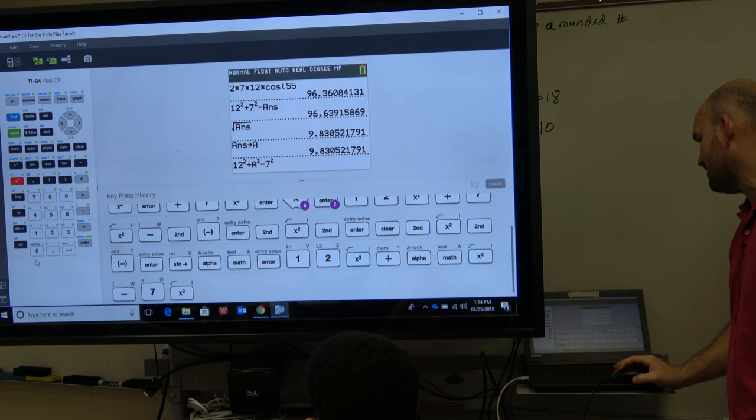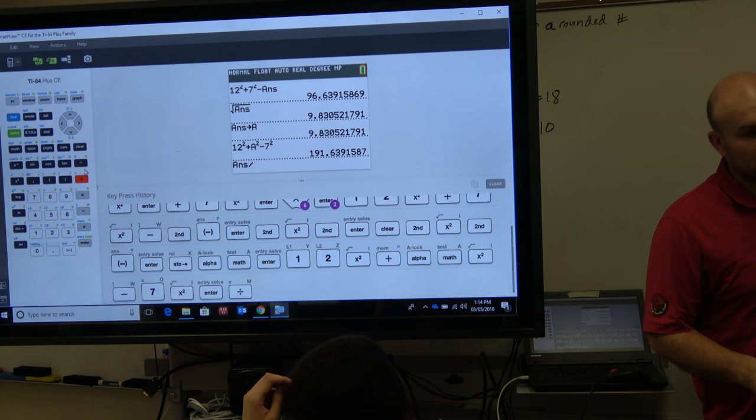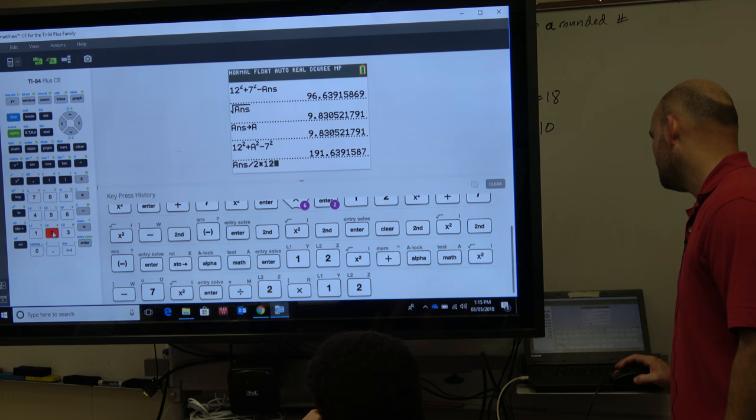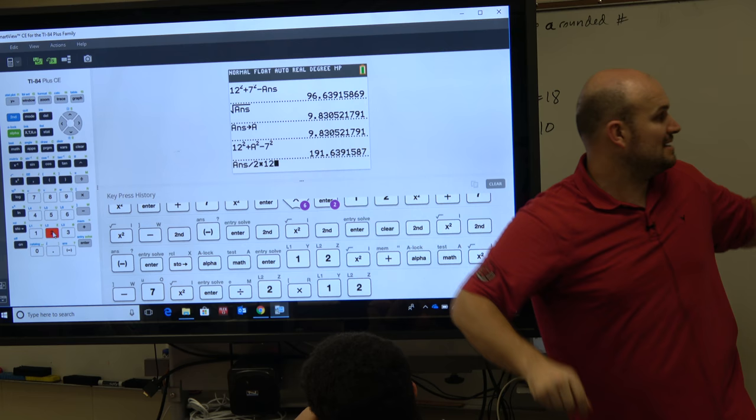Now I'm going to want to divide that. Now here's where it's really important. I'm going to divide that by my denominator. So here's an important thing. What most students will do is they'll do answer divided by 2 times 12, like this, and then times a. The problem with this is, guys, your calculator is going to divide by 2 and then multiply by 12. That's not what we want it to do, right?